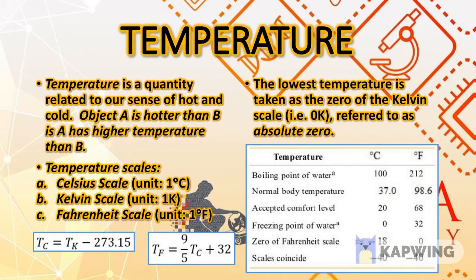We have the following temperature scales by which we measure the temperature of an object: the Celsius scale, the Kelvin scale, and the Fahrenheit scale. The Celsius scale is the metric system temperature scale and its unit is degrees Celsius. The Kelvin scale is likewise a metric system scale and the unit is simply Kelvin. The Fahrenheit scale is the English system temperature scale and the unit is degrees Fahrenheit.